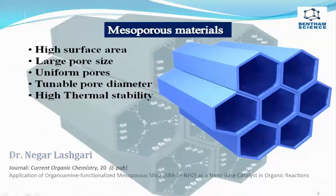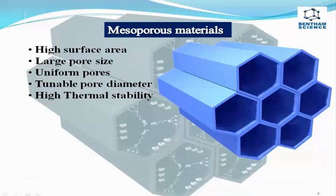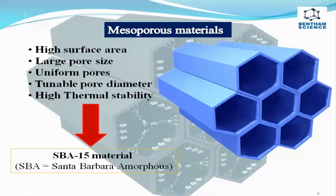Mesoporous silica materials with arranged uniform pores, tunable pore diameter, and very high surface areas have been attractive since their first reports in 1992. These materials offer more advantages over other porous solids due to their interesting textural properties. Because of its larger pore size and higher hydrothermal stability, SBA-15 of two-dimensional hexagonal structure has received great attention in the past decade.